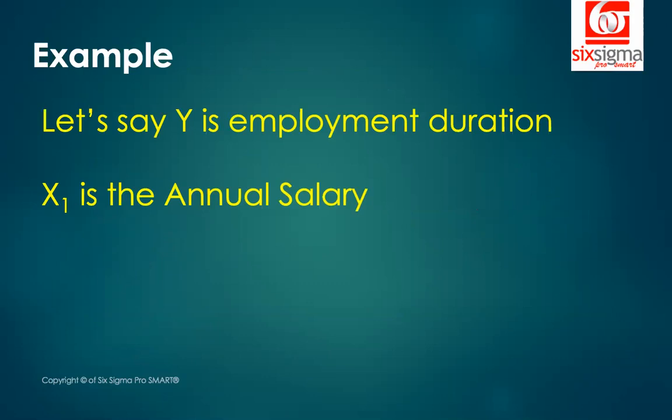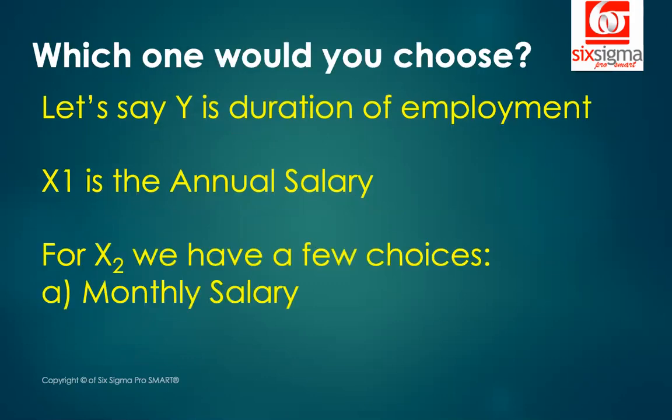Let's say y is an outcome of interest — you want to predict the duration of employment of an employee in a company, say in months. One of the explanatory variables is annual salary. The higher the salary, maybe it would lead to a higher tenure. The management tells you not to rely on just one variable, so what would be your preferred choice as the second variable? One option is monthly salary.